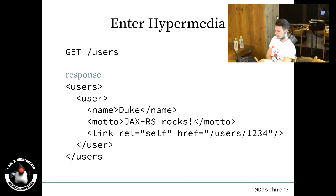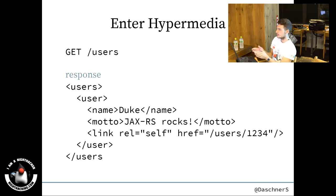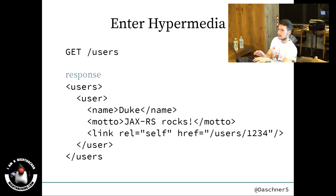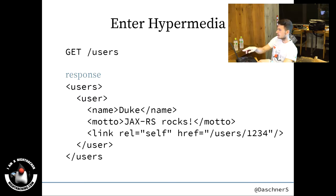So now we're no longer assuming how the URLs will be created on the client side; rather, the server gets back control of the URLs. Because now the server could change the logic of how the URLs are created, and the client wouldn't break. The client would just look again for the self-relation and then follow that link. So it no longer assumes how the URLs are created.